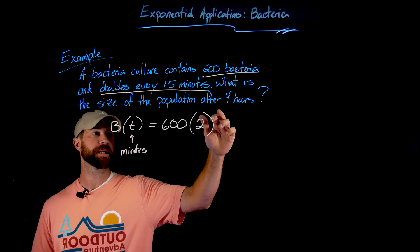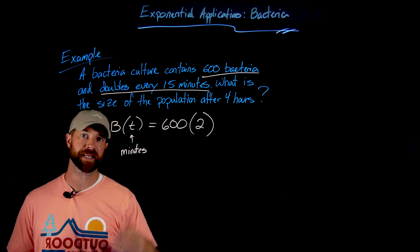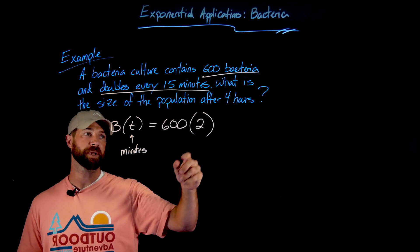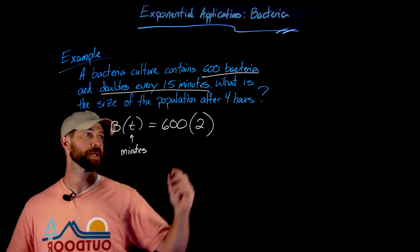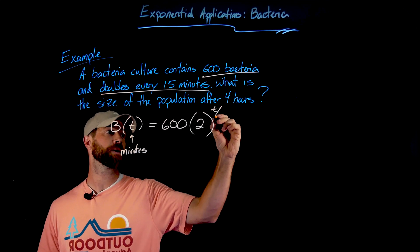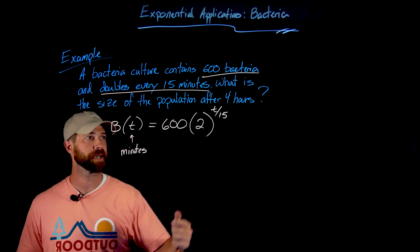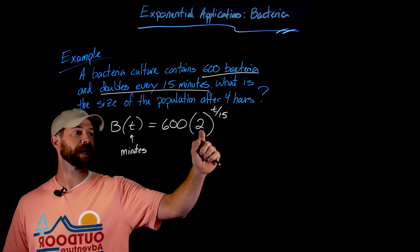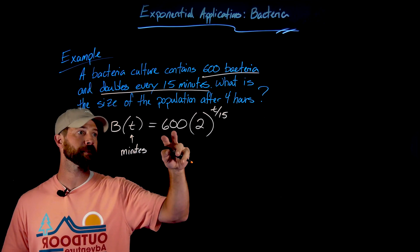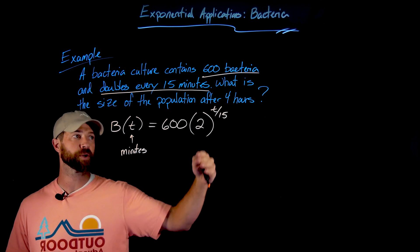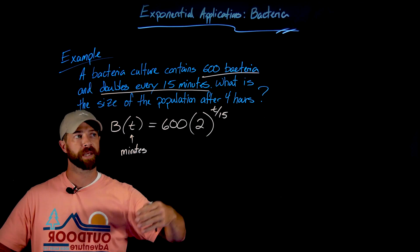So we don't want to just put a t here—that would mean it doubles every minute. To make sure this doubling is applied only every 15 minutes, we would write this as t over 15. And importantly, what this does is then it will only apply this factor of 2, or double the population, once this t value reaches 15.